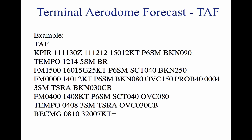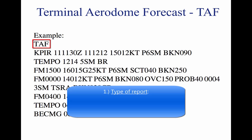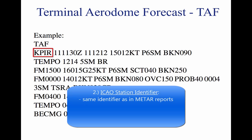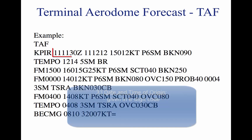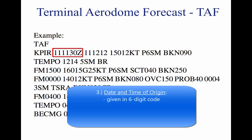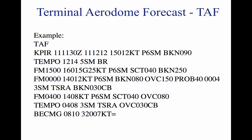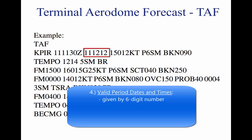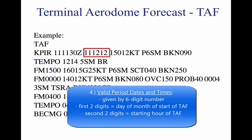The TAF indicates the following information in sequential order. One, type of report — TAF. A TAF can be either a routine forecast (TAF) or an amended forecast (TAF AMD). Two, ICAO station identifier — KPIR, same identifiers as a METAR report. Three, date and time — 111130Z; date is the first two numbers, followed by the time in Zulu. Four, valid period date and time — 1112/1212; given by a six-digit number group where the first two numbers indicate the date, followed by the two-digit beginning time, and the last two digits are the ending time.